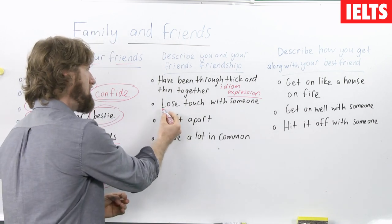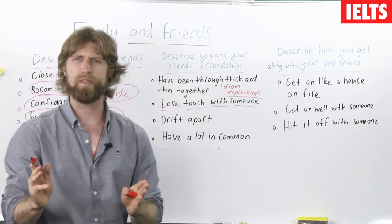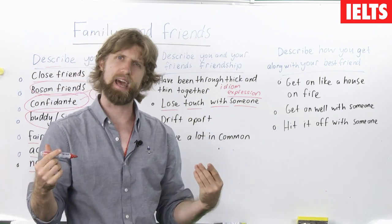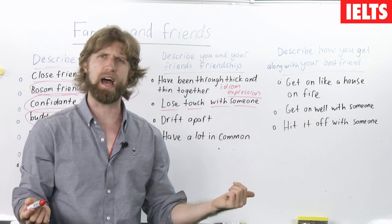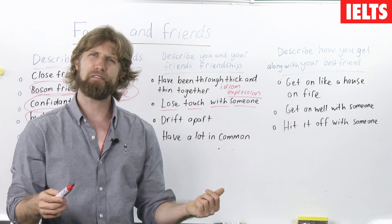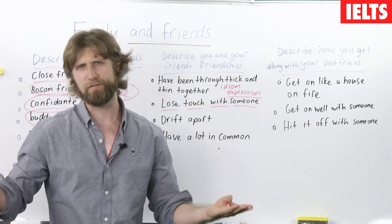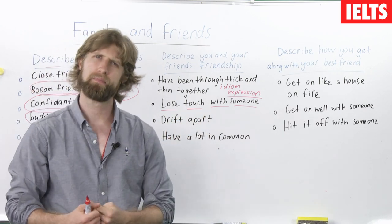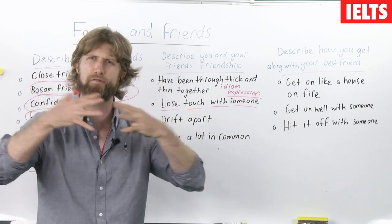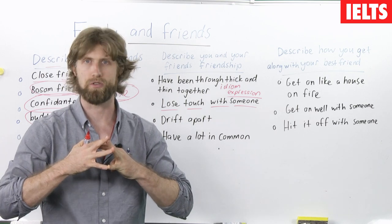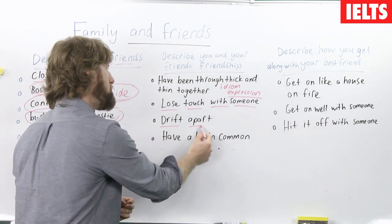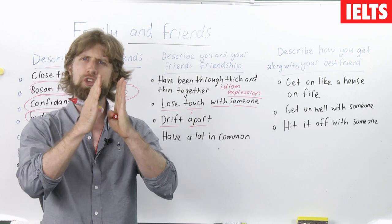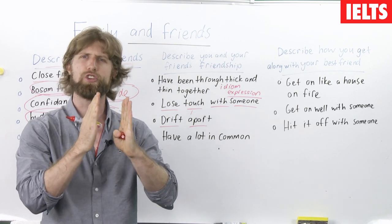You can also say lose touch with someone. That means you were close — maybe like a school friend — but after moving to different cities you don't talk anymore. You can say: at school, I was very close to one guy called Richard, but after three years we moved to different cities and we don't talk anymore — we lost touch with each other. That just means you don't really communicate and the friendship is not as strong as it used to be. Drift apart is very similar to lose touch.